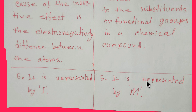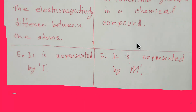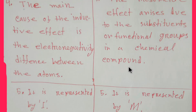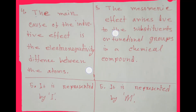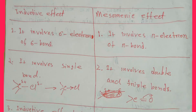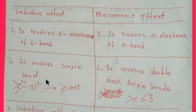To recap: the inductive effect involves sigma electrons of sigma bonds, while the mesmeric effect involves pi electrons of pi bonds. The inductive effect involves single bonds, and the mesmeric effect involves double and triple bonds.